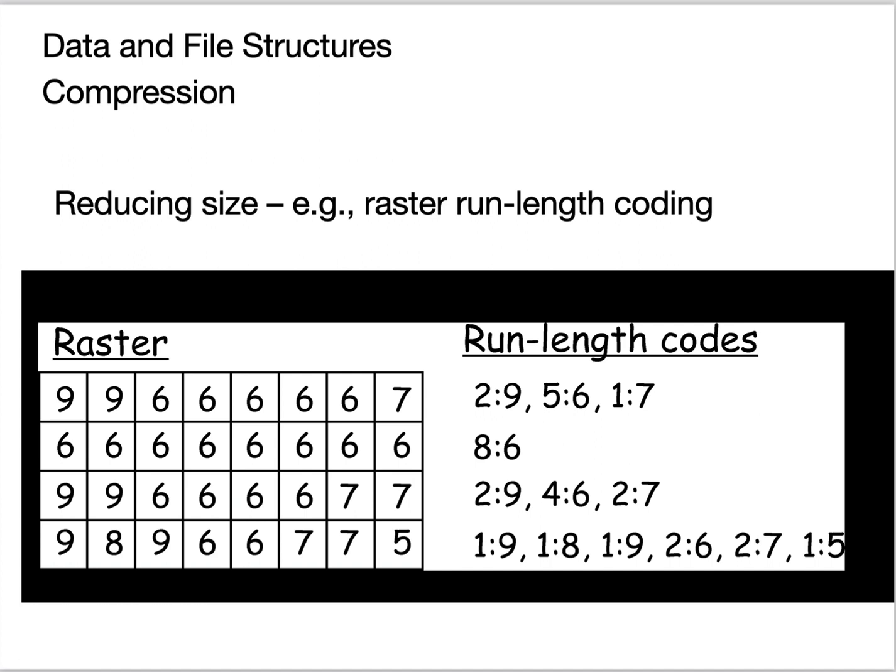Here's a simple and basic kind of compression for rasters. I have what's called a run length code, and what I do is I have a run of data, like there's two nines, that's a run of two, and then there's five sixes, that's a run of sixes.